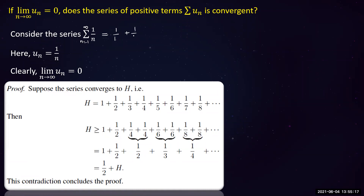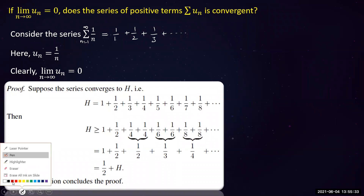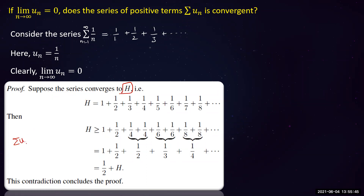Expanding Σ(1/n): 1 + 1/2 + 1/3 + 1/4 + … For convenience, assume this series converges to some value h. So the sum of all these terms equals h.